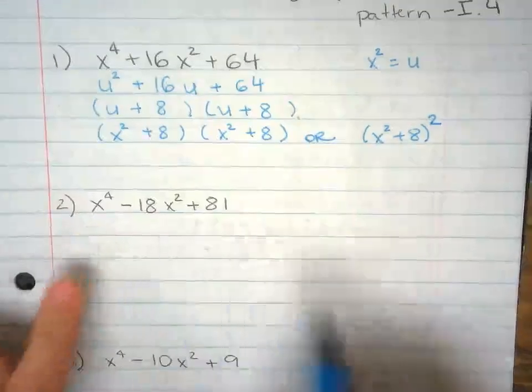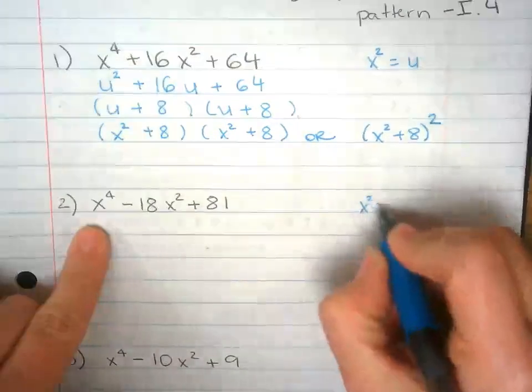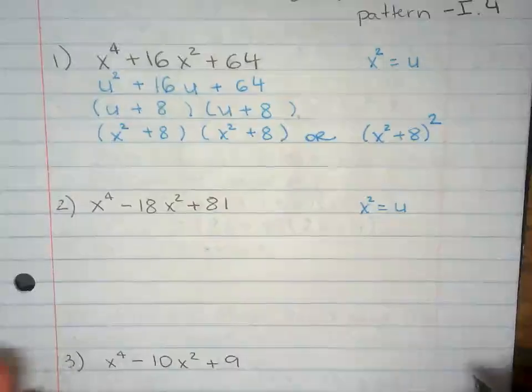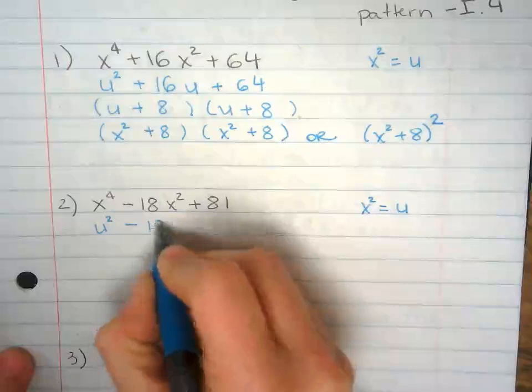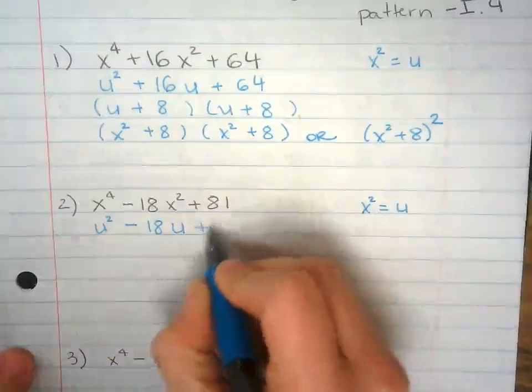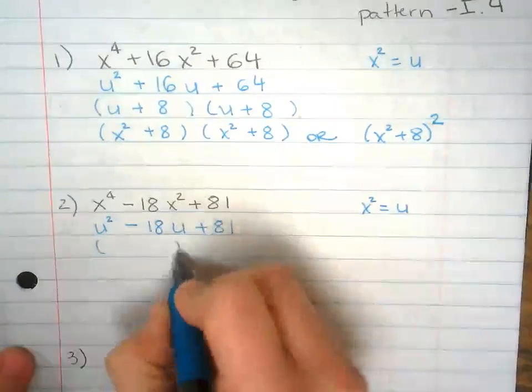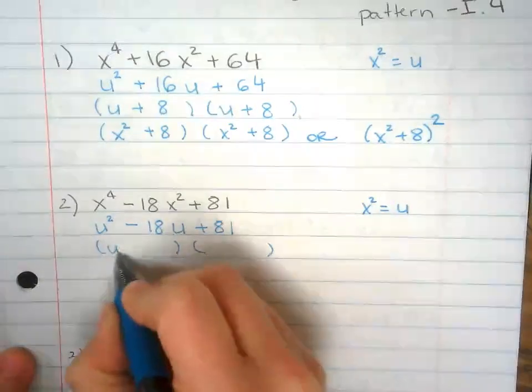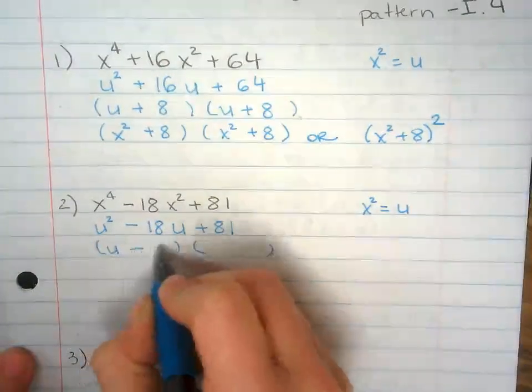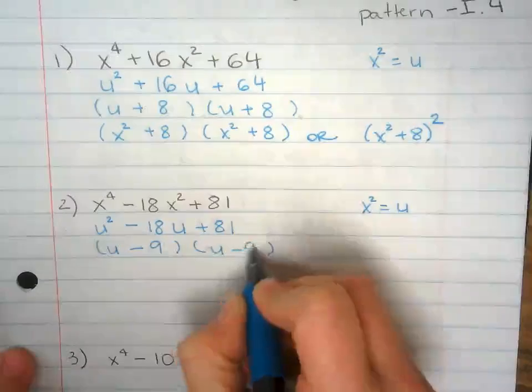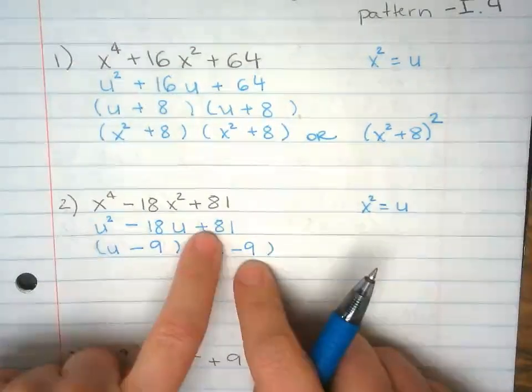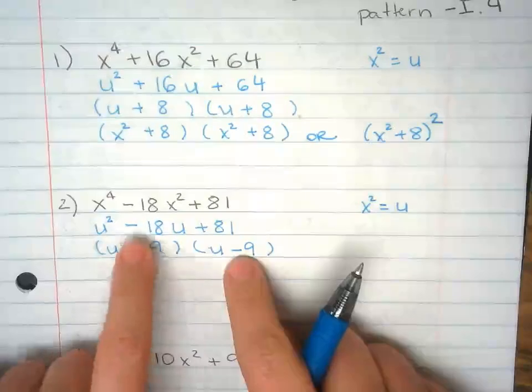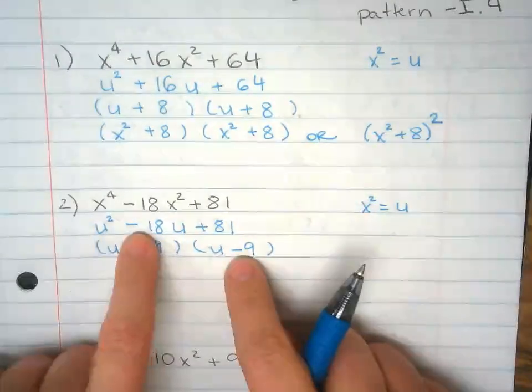Another one. So I'm going to substitute x squared with u. So u squared minus 18u plus 81. Factor that. Negative 9 times negative 9 equals positive 81. Negative 9 minus 9 equals negative 18.